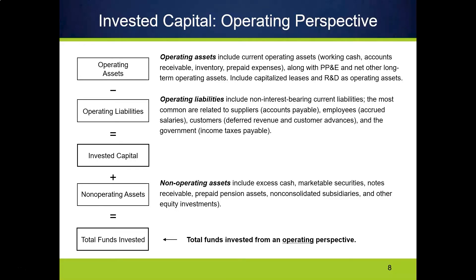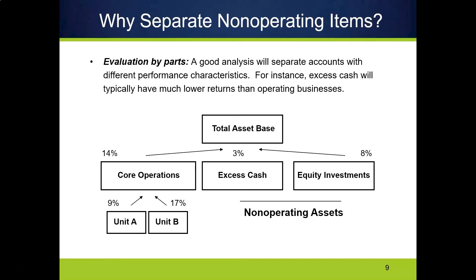We add non-operating assets at the end of our DCF and that gives us total funds invested. You may be asking: why do we even bother with all this? It's a lot of work, there are assumptions involved, we might make mistakes — why should we separate non-operating items rather than just treating all of the firm's assets minus their liabilities as invested capital? The answer is because typically the firm's non-operating assets have a lower return than the firm's operating assets, almost by definition.